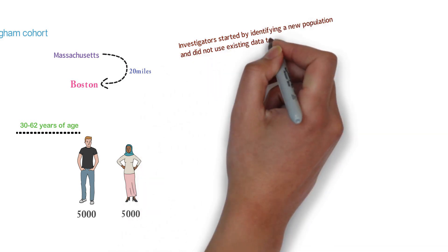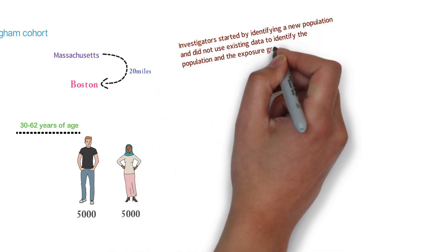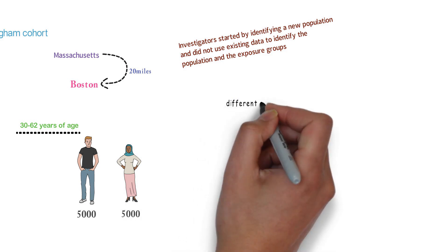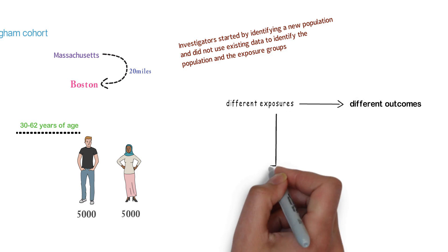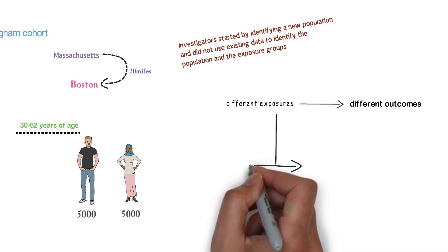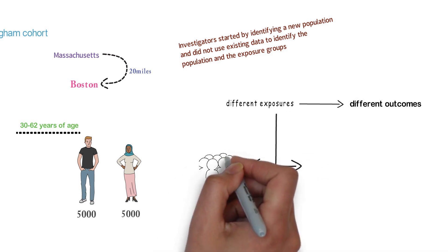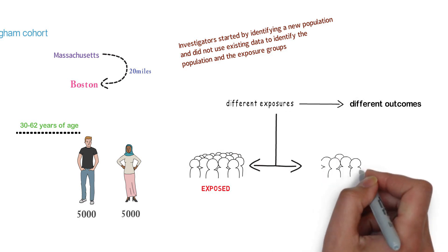There were several hypotheses to be tested with different exposures and different outcomes. For each exposure, investigators identified the exposed and the not-exposed groups. For each exposure, the participants were followed for the development of disease, and different exposures as well as different diseases were studied.